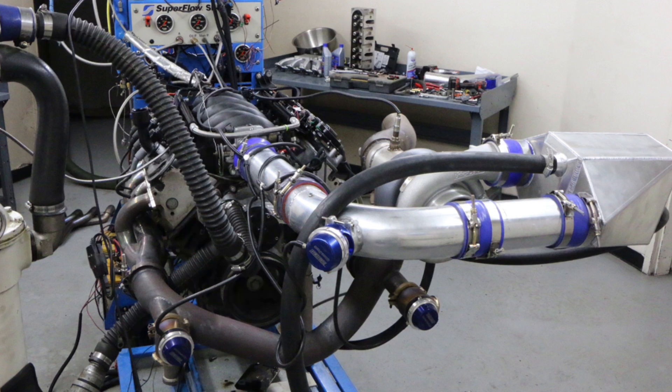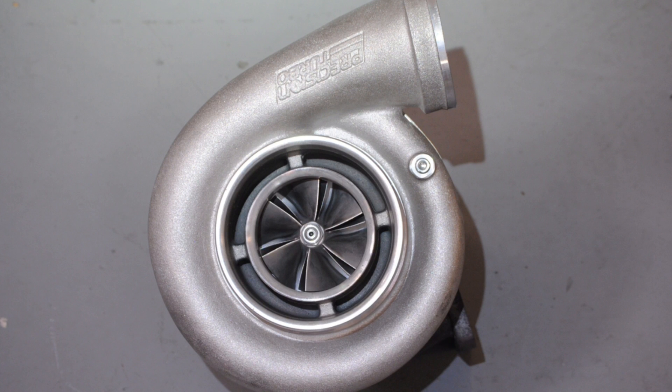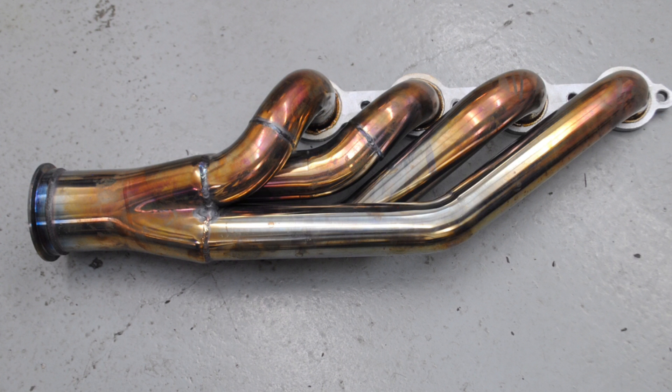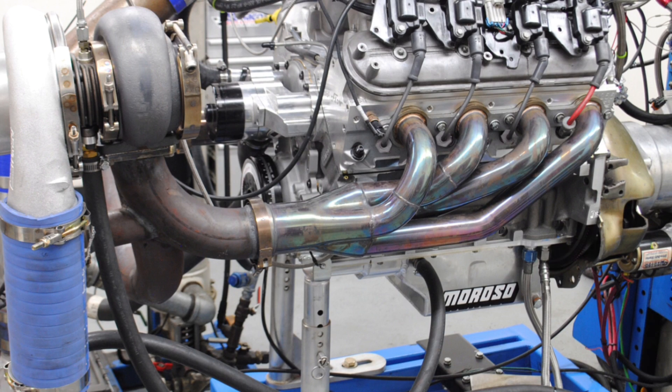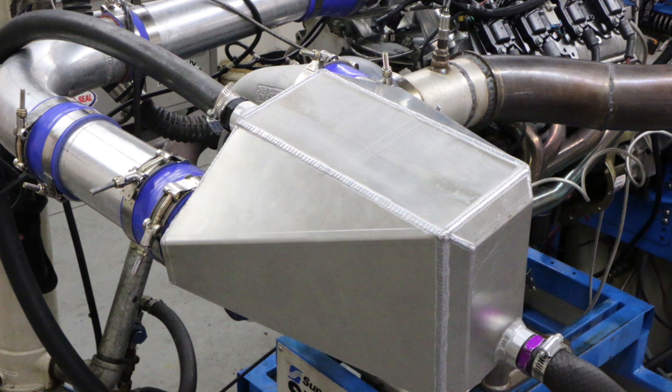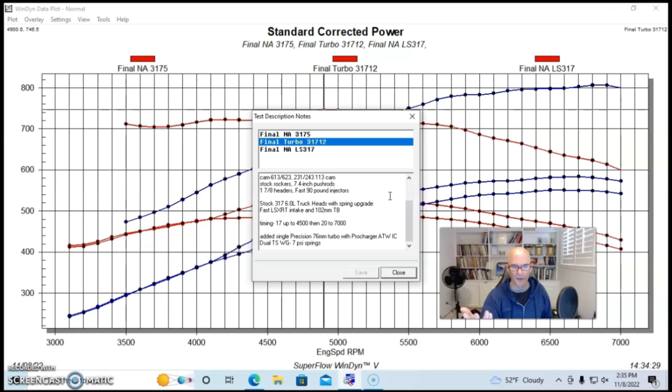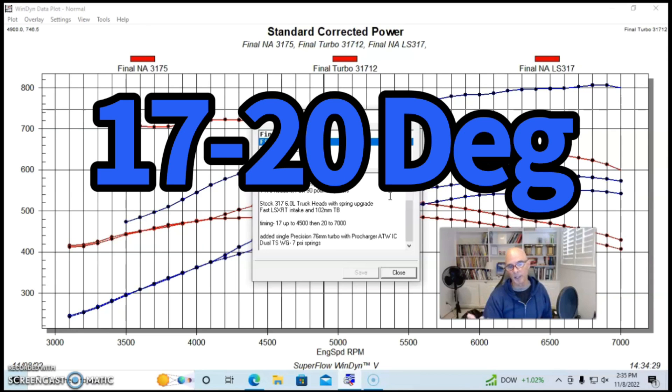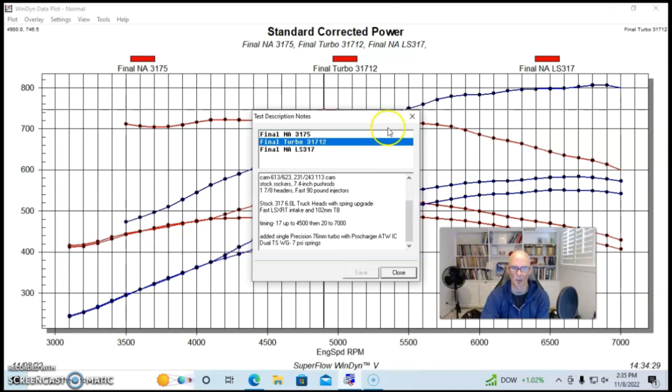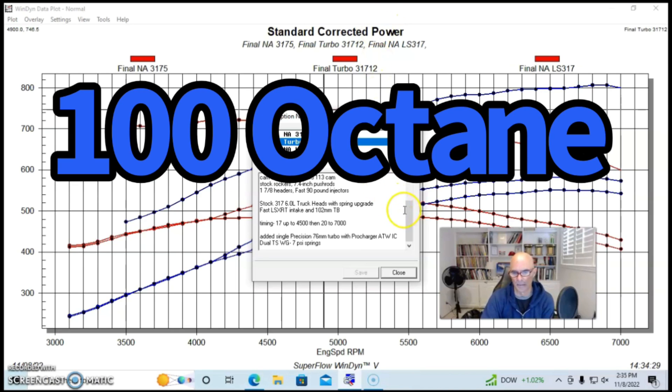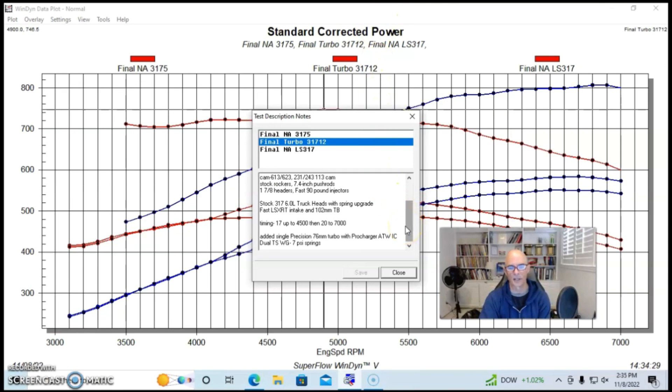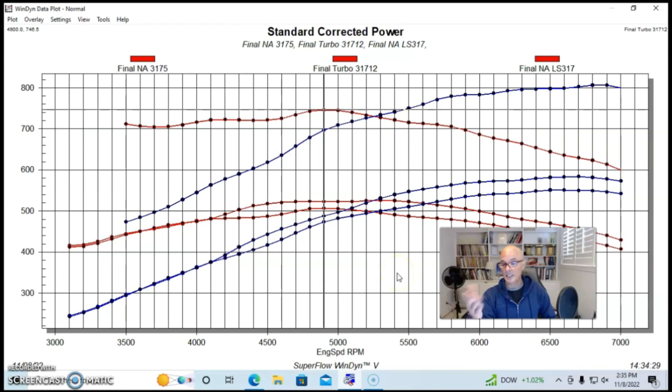Let's take a look at our turbo setup. We had a single precision 76 millimeter turbo with a Y pipe, two exhaust manifolds feeding the Y pipe. We ran this through a procharger air to water intercooler with ambient dyno water doing the cooling. We didn't have very high charge temperatures, very low boost. Timing varied from 17 degrees on the load in up to about 20 degrees. This was run on 100 octane race gas.